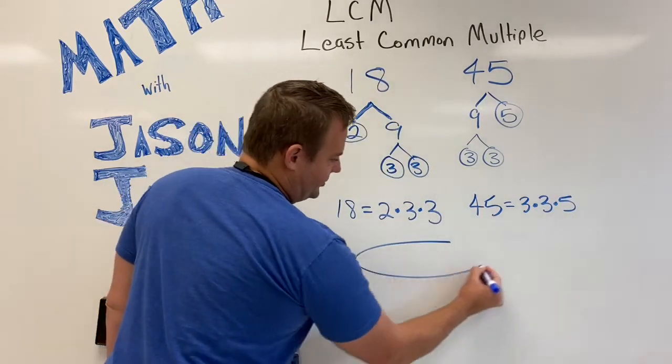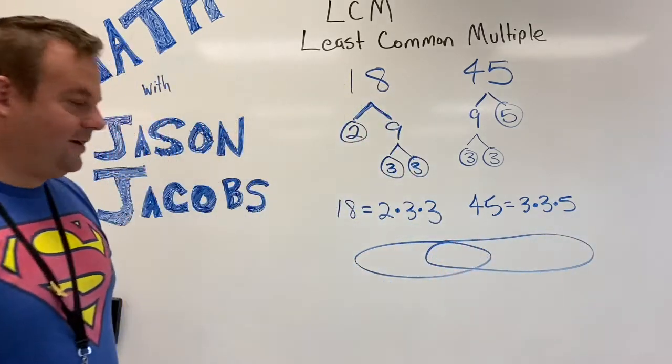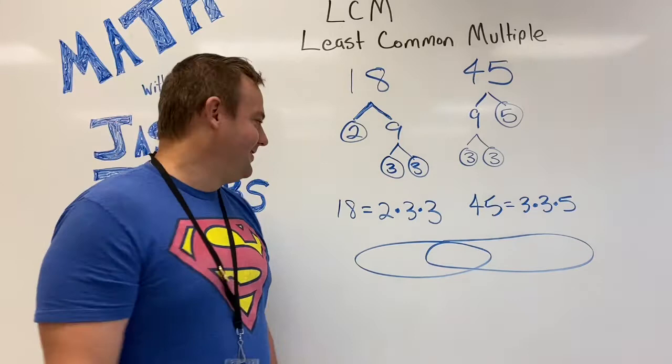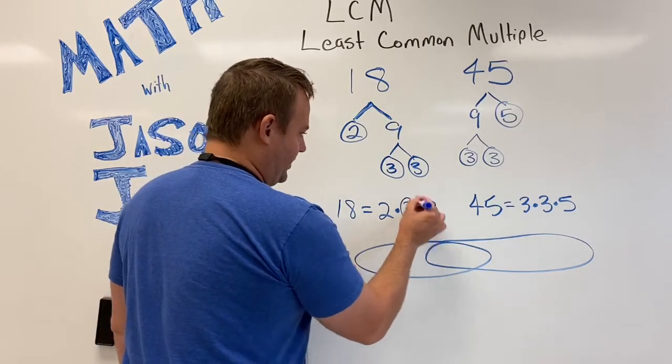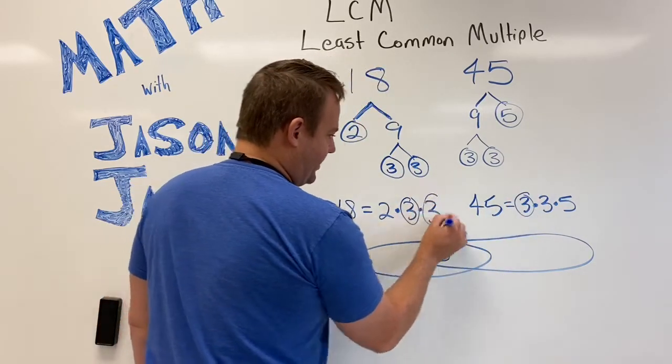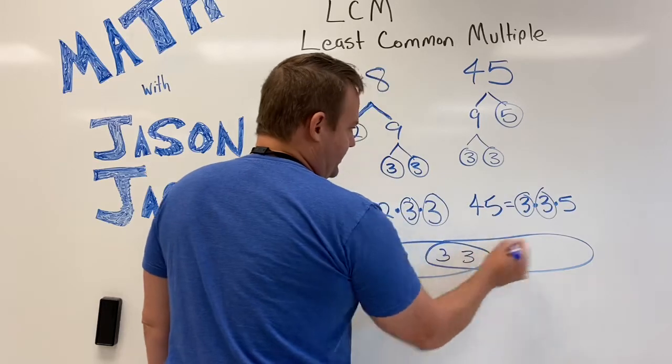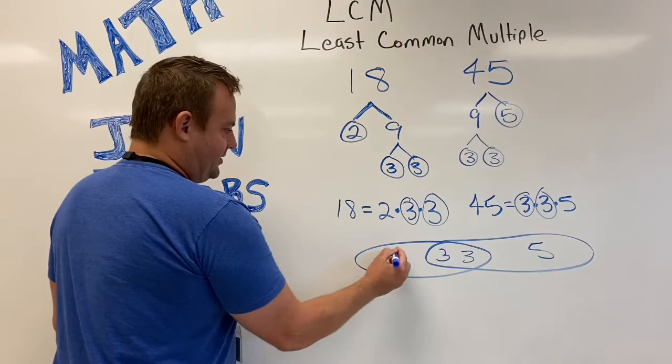And now we'll make our Venn diagram. Here's a challenge: try to make it without lifting your pencil up. So now we find what they have in common. A 2? No. 3? Yeah, they both have a 3, so did you guys get the 3 that's in common there? And then another 3. And then this 5 is not in common with any of the prime factors on 18, and this 2 is not in common here.